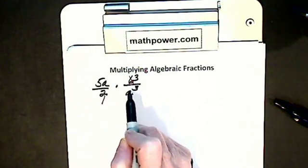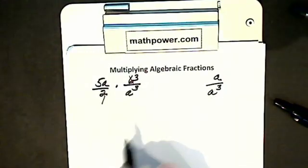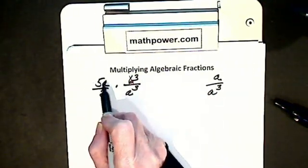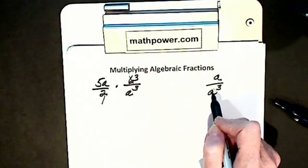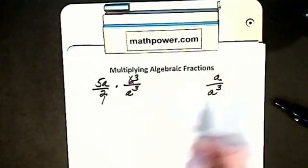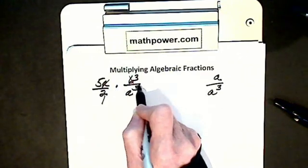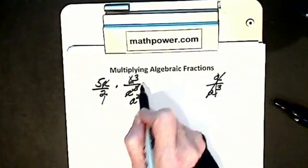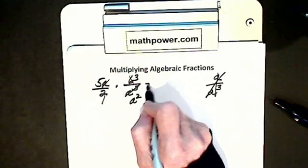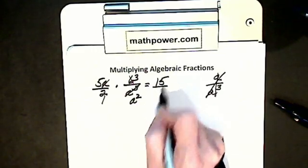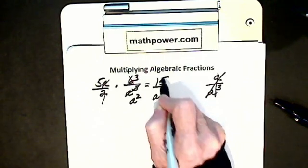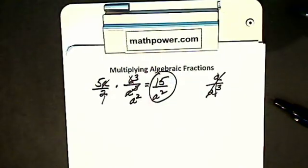I look at my a's. I have an a here and an a cubed here, so I can cancel. It's just like having an a in the numerator and an a cubed in the denominator — they're just on an angle. So a into a cubed gives me a squared in the denominator. Now I multiply across: 3 times 5 is 15, 1 times a squared is a squared. So my answer is 15 over a squared.